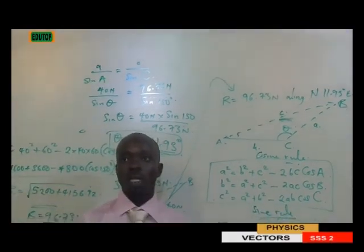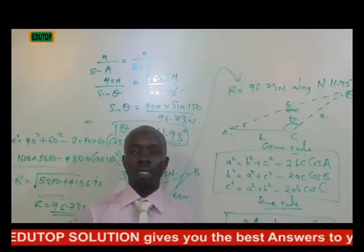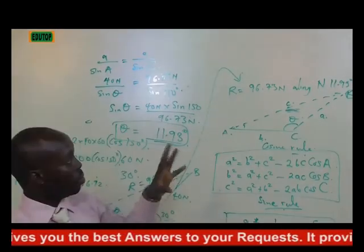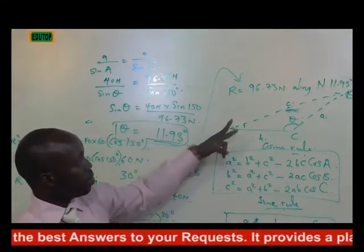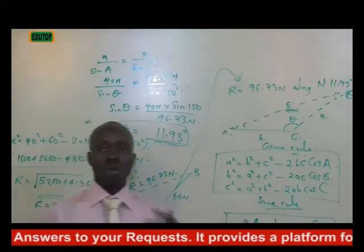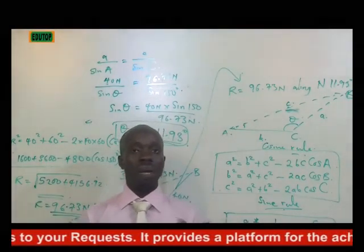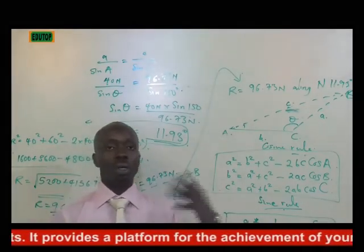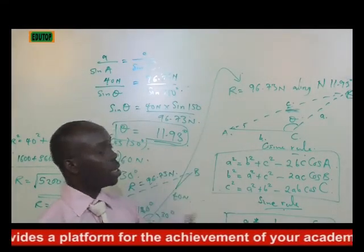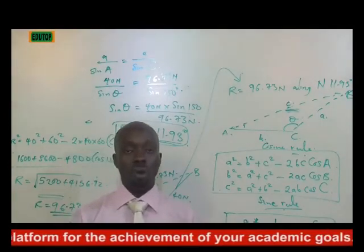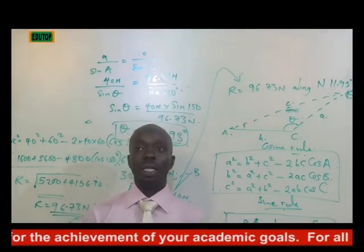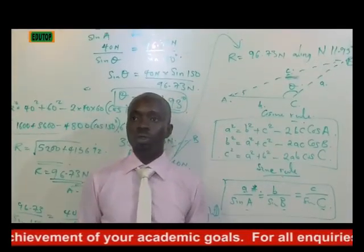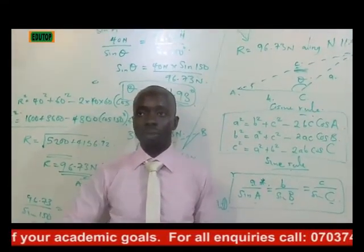At this junction, we are done with points or every issue or every problem relating to vector quantities whenever we are considering two. So in our advanced method, in the advanced method we will be looking at later on, in our SS3 section, we will be looking at when you have three, when you have four, and when you have five vectors being considered. So let's do some exercises, let's do some examples.